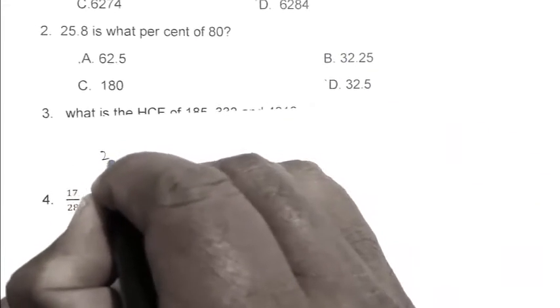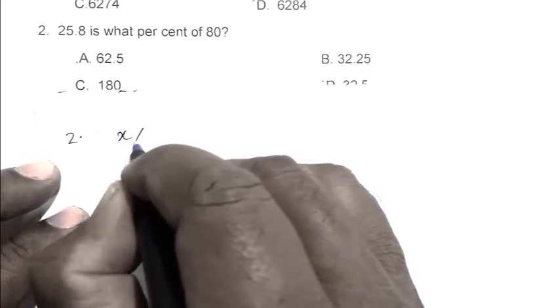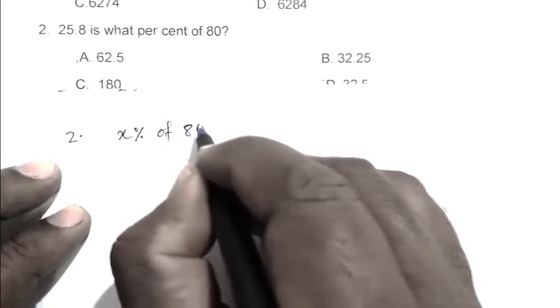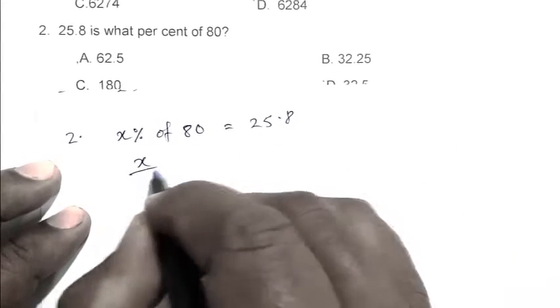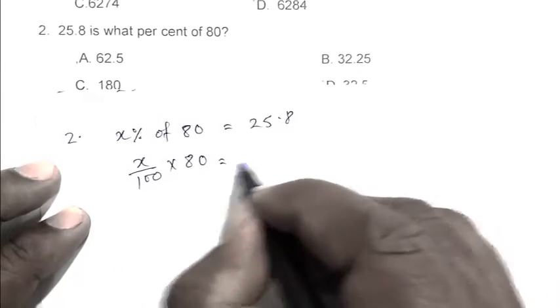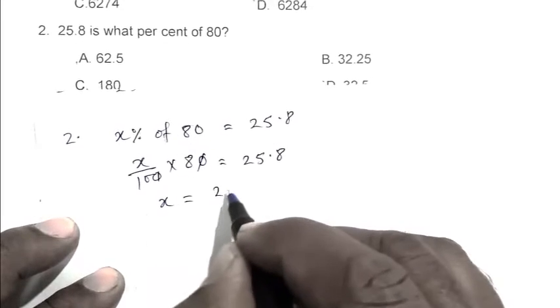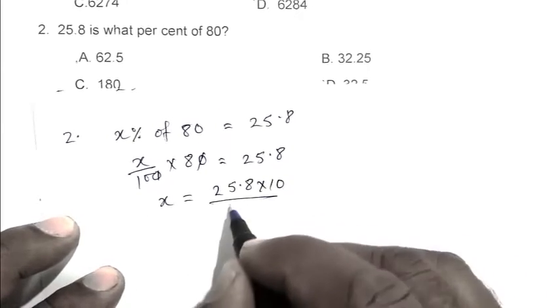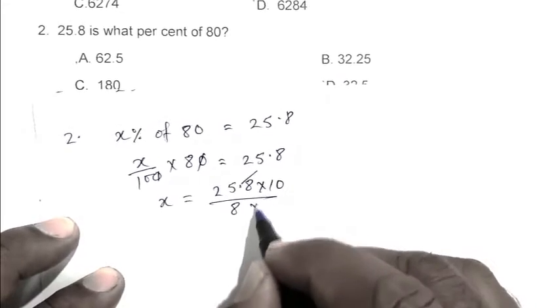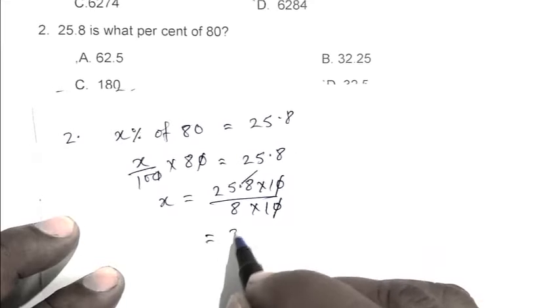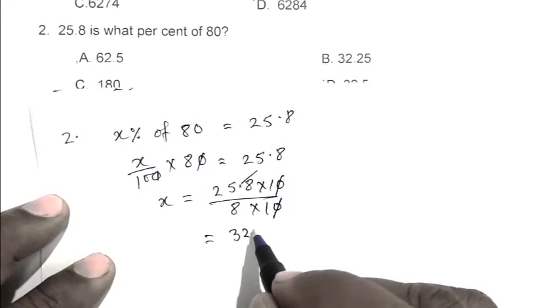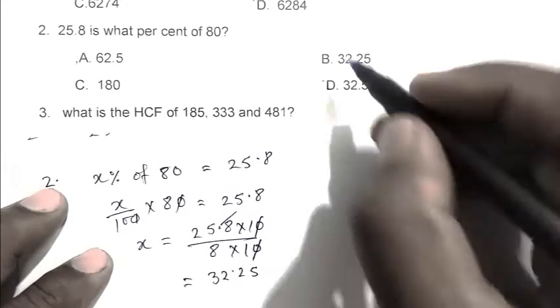Question number 2: 25.8 is what percent of 80? We can take X percent of 80 equals 25.8. So X/100 multiplied by 80 equals 25.8. X equals 2580 upon 8, which gives us 32.25. So B is the right answer.